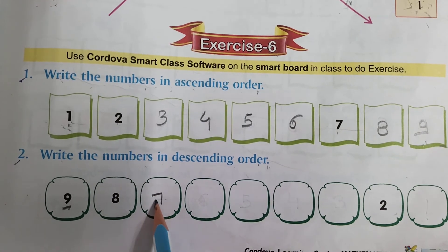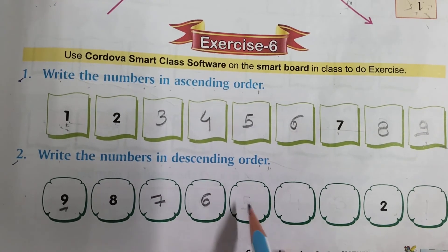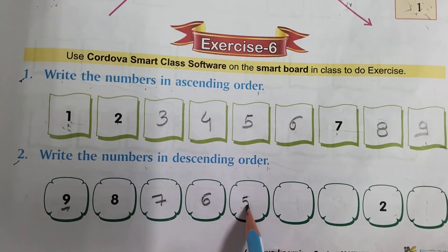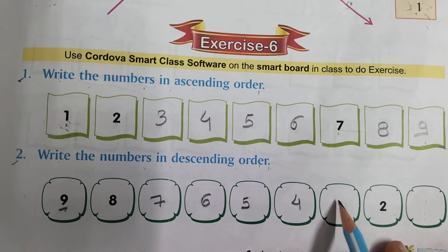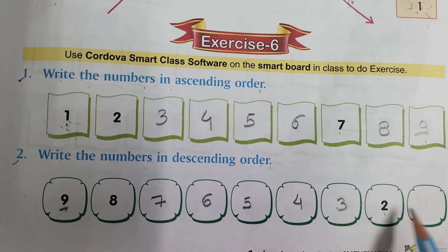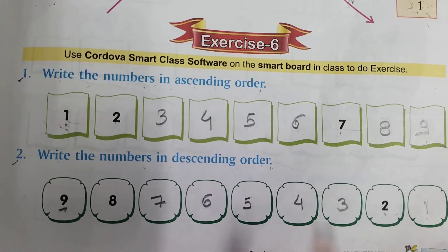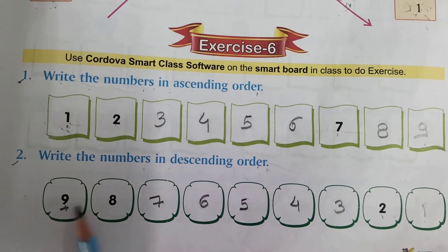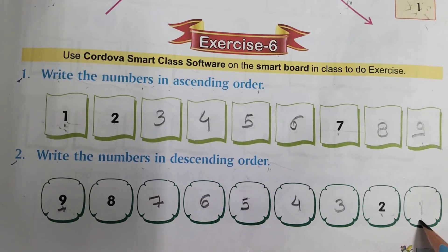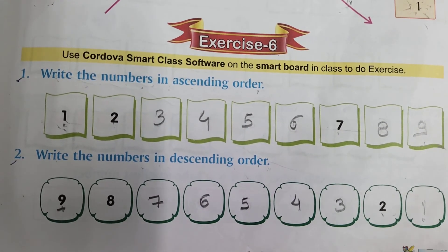Seven, six, five, four, three, two, and one. Yahan par humne kya kiya — greater number se start karke hum smaller number ki taraf aaye, toh yeh kya ho jaega hamara? Descending order.